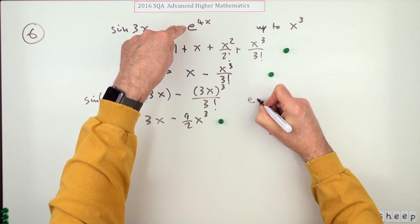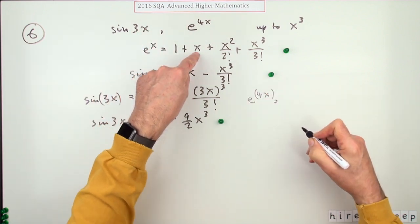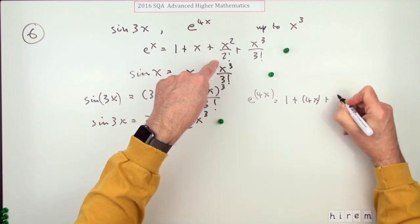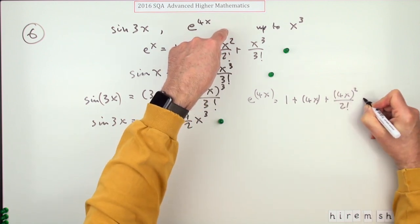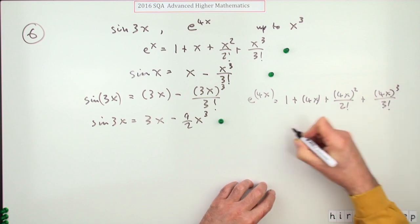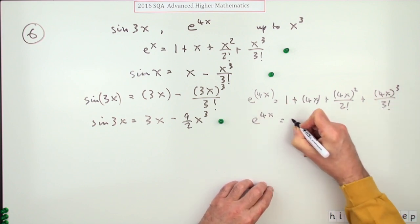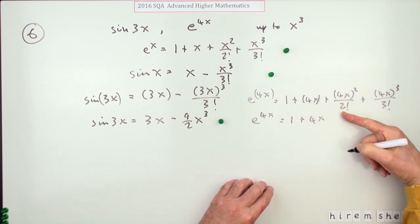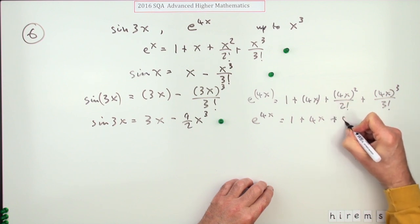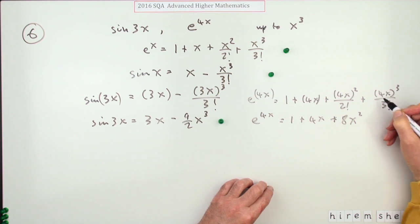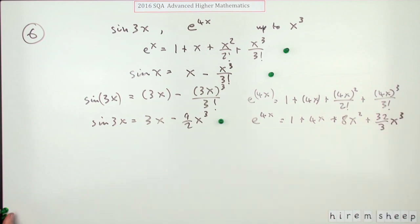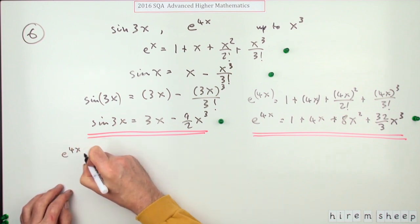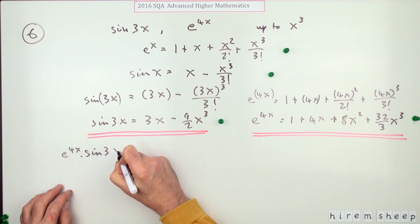And similarly, e to the 4X will just be this with the X's replaced with 4X's. So 1 plus 4X plus 4X squared over 2 factorial plus 4X cubed over 3 factorial. And then just tidy it up. So e to the 4X will be 1 plus 4X. That 2 will knock that 16 down to an 8, so plus 8X squared. The 2 in this will half that number, so that 64 will drop to 32, so 32 upon 3X cubed. There's the next mark.